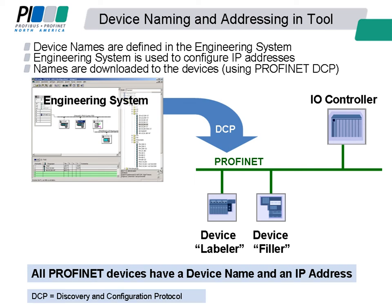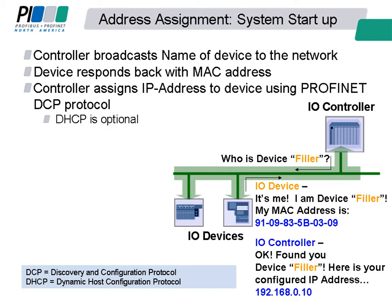One important concept we must mention is naming. With Profinet, all devices on the network have a device name for easy management. Device names are defined in the engineering system as well as IP addresses. The device names are then downloaded to the devices using the Profinet DCP protocol. The device name is used for startup, and the I.O. controller finds the devices by their name and sets their IP address automatically.